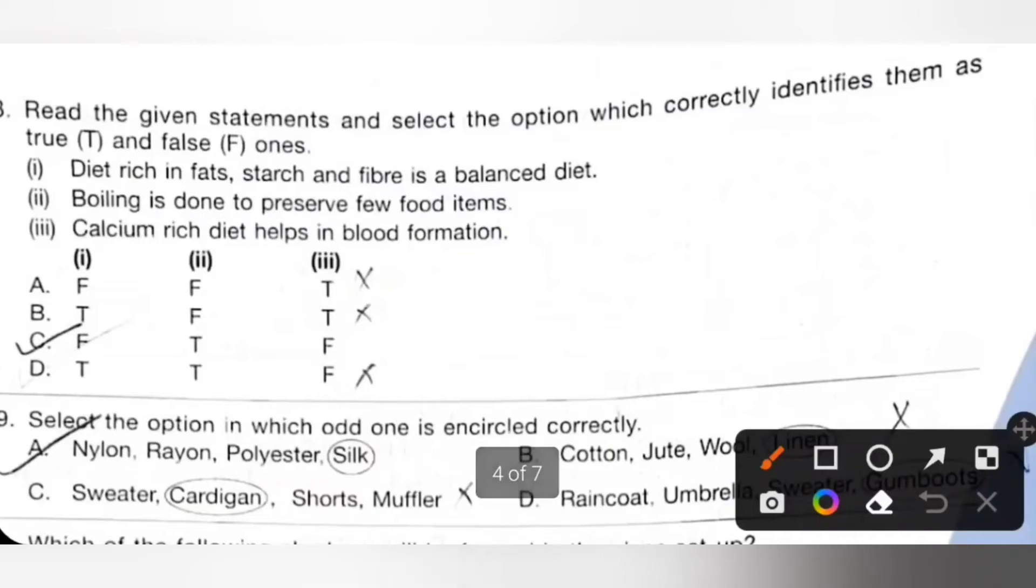Eighteenth: Read the given statement and select the option which correctly identifies them as true and false ones. One: Diet rich in fat, starch and fiber is a balanced diet, it is false. Two: Boiling is done to preserve few food items, it is correct. Three: Calcium rich food helps in blood formation, it is incorrect because calcium rich diet helps in bone formation. So false, true and then false. Option C is the correct answer.